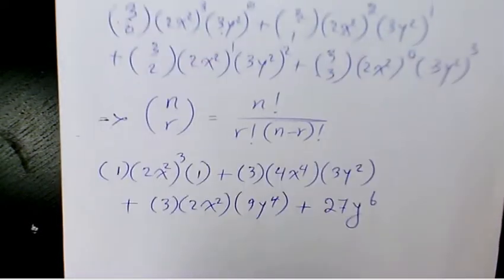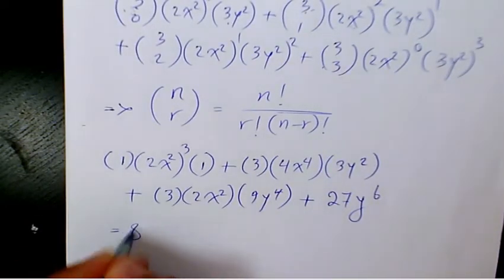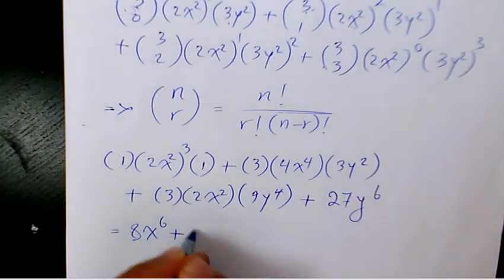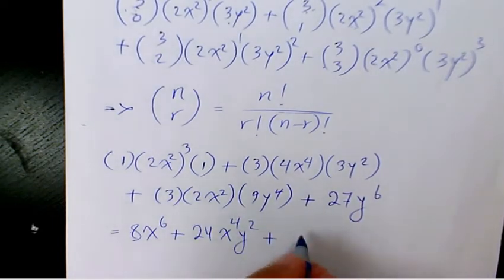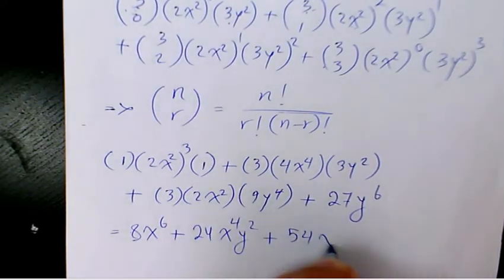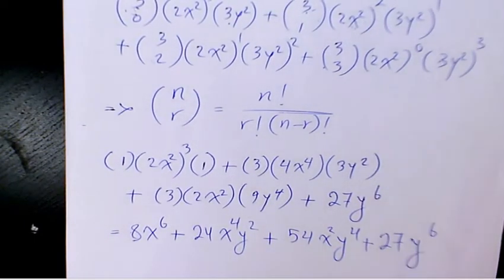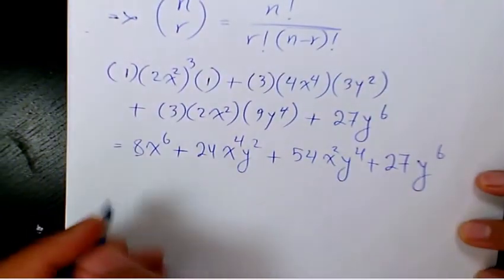When you simplify it, that's going to be 8x⁶ plus 24x⁴y² plus 54x²y⁴ plus 27y⁶. That's the final answer.